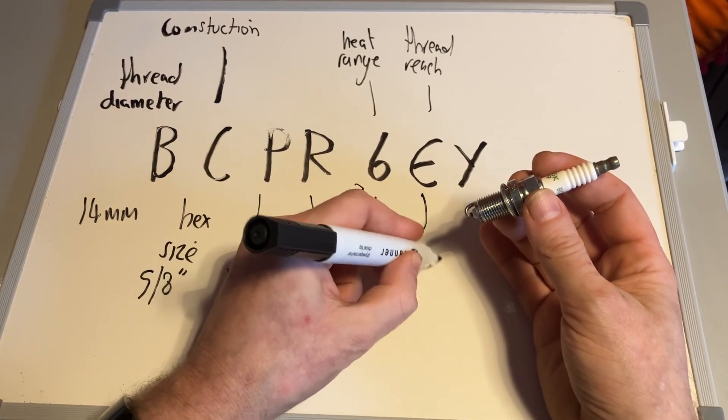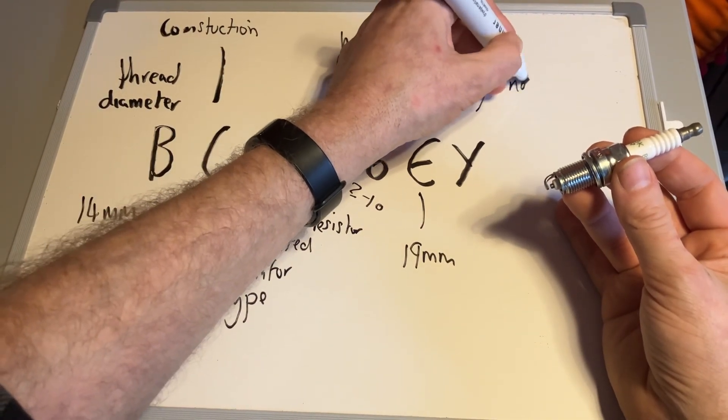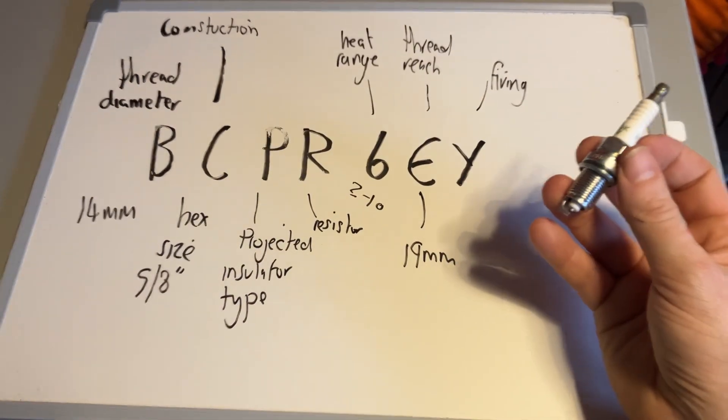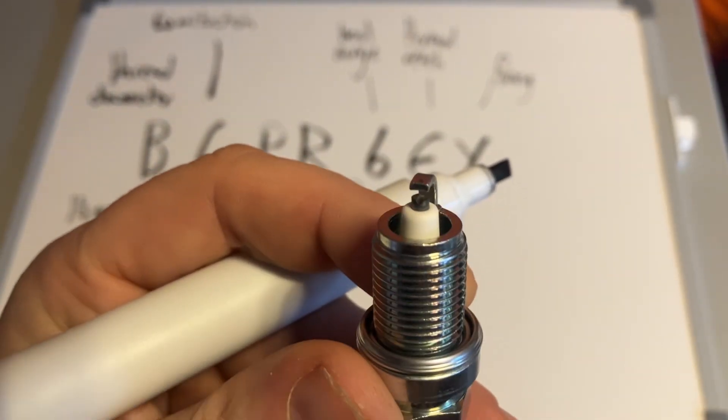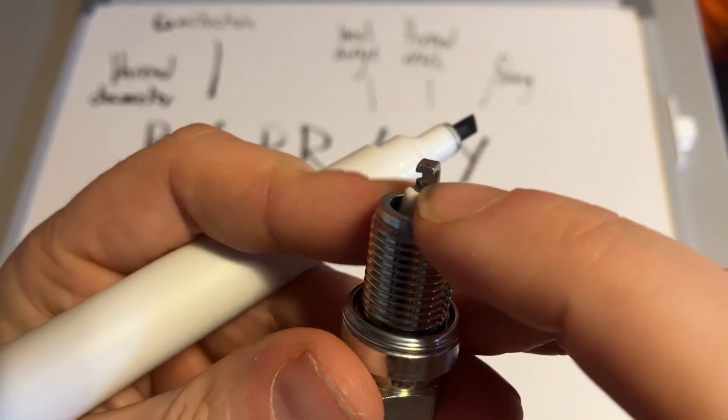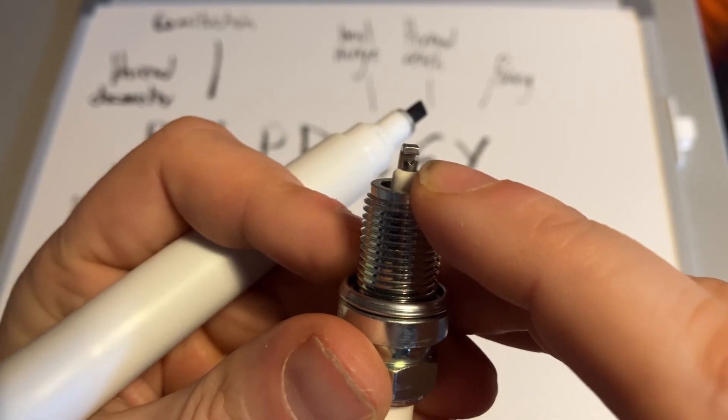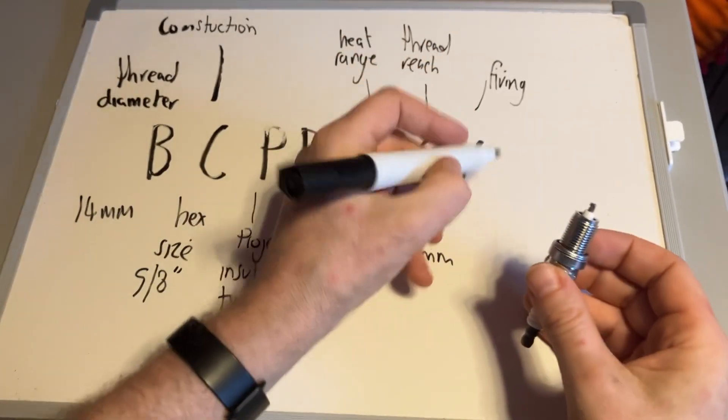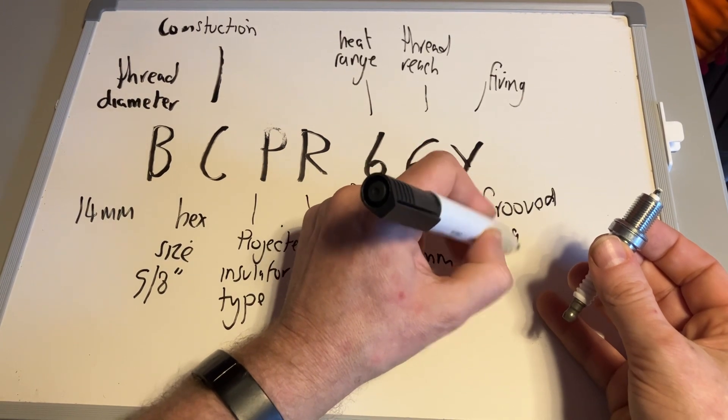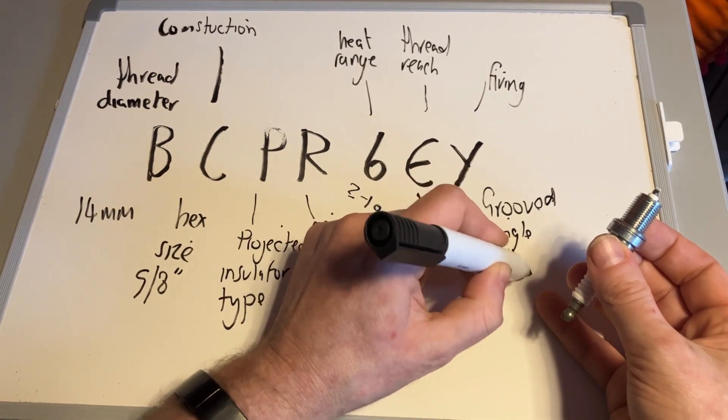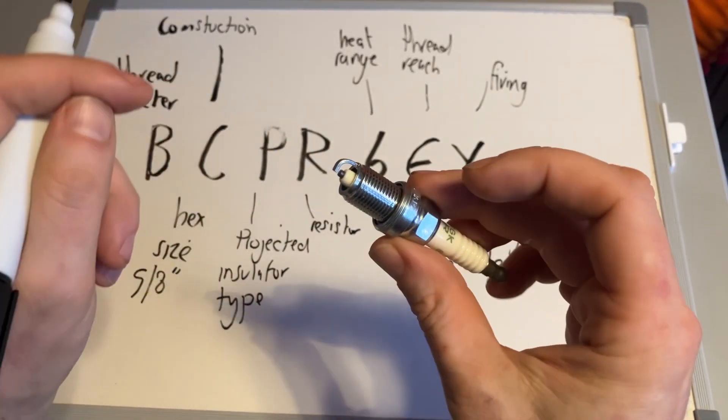And then Y is the firing of that spark plug. The firing is how it lets the spark fire. This particular one, if we can get the camera close enough, has a grooved electrode. In the middle of that bottom bit there, you can hopefully see a groove. That indicates it's a grooved electrode. Y for NGK signifies that it is a grooved single electrode. Obviously there are different types—there are multi ones—this is just a single electrode on this particular spark plug.